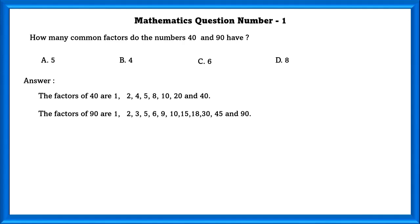The factors of 40 and 90 are listed. As we can see here, the common factors of 40 and 90 are 1, 2, 5 and 10. So there are 4 common factors for the numbers.